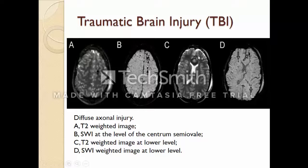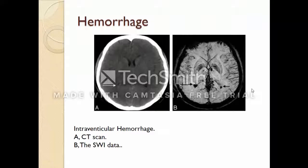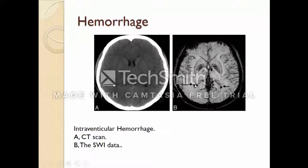Here one trauma effect is shown, and here three different traumas are detected. SWI is particularly sensitive to the presence of very small hemorrhages because susceptibility weighted imaging can detect iron deposition in hemorrhages and visualize where the hemorrhage occurs. In this picture, the CT scan fails to detect a hemorrhage, whereas the CT scan detects only one hemorrhage but the SWI image detects two different hemorrhages.